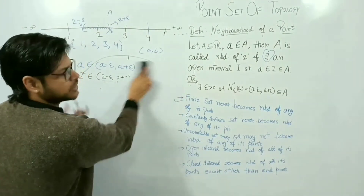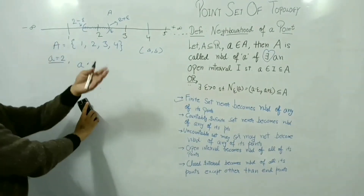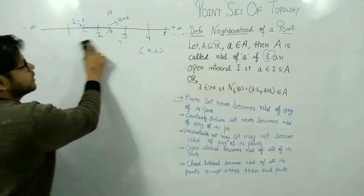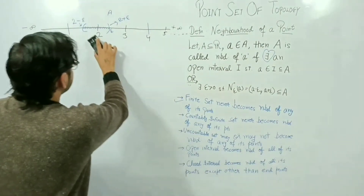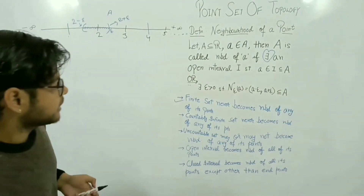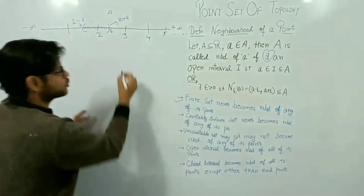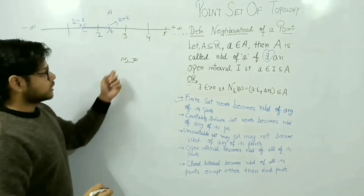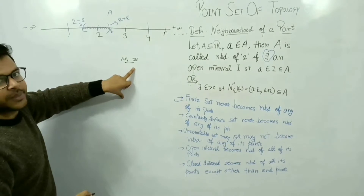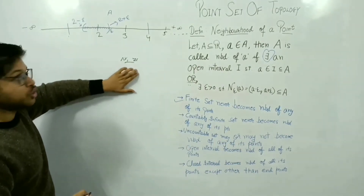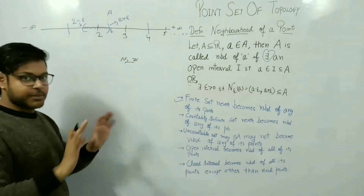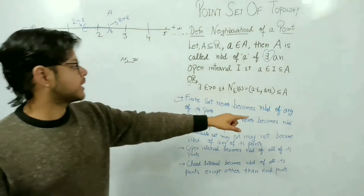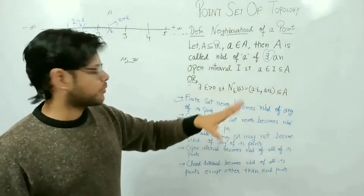Similarly, for the set of integers and natural numbers, which are countably infinite sets, we can say that a countably infinite set never becomes a neighborhood of any of its points.